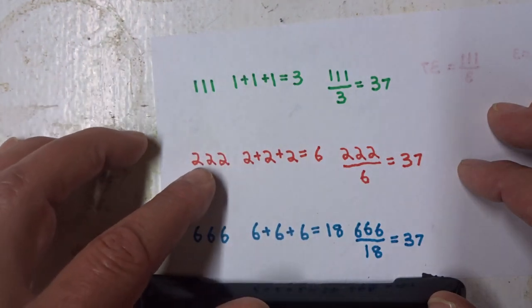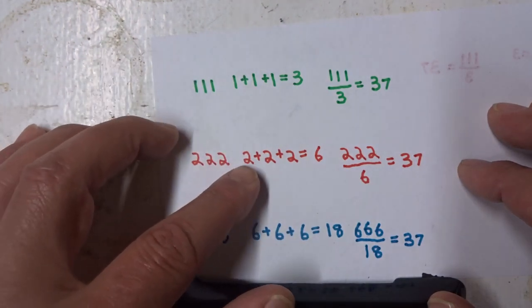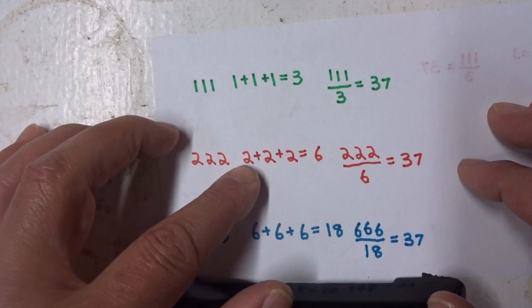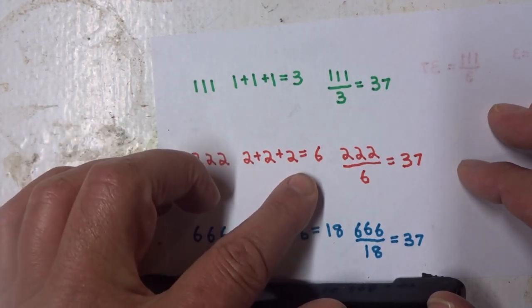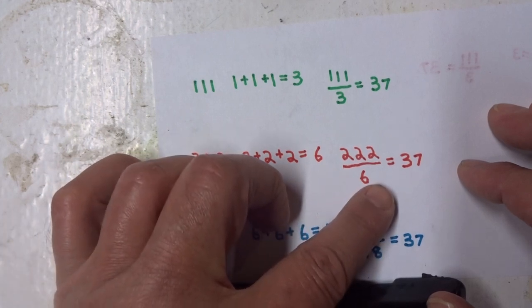If you take 222, and add the twos together, which equals 6, and divide 6 into 222, you get, once again, 37.